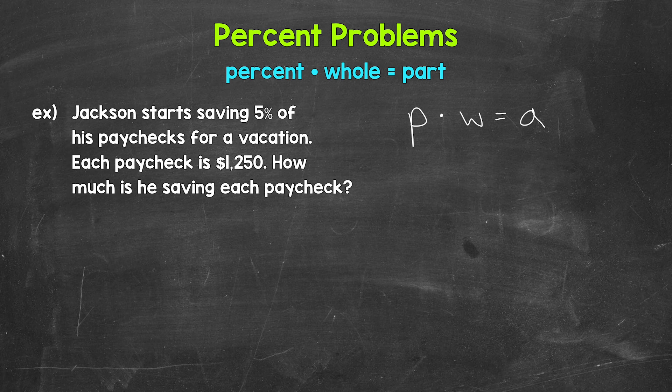Let's start with the percent. Jackson starts saving 5% of his paychecks for a vacation. So our percent is 5%. And when we plug in the percent to the equation, we're going to use the decimal form. That makes the percent easier to work with within the equation.